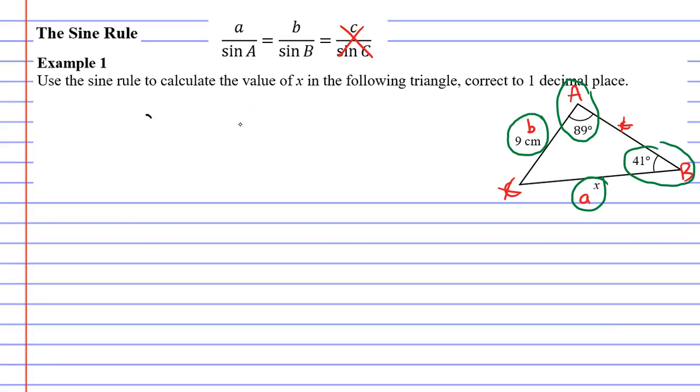So let's copy down the part of the formula that we're going to use. a over sine A equals b over sine capital B. Now what we need to do is substitute. Lowercase a is x, and capital A is an angle of 89 degrees. Lowercase b is 9, and capital B is an angle of 41 degrees.